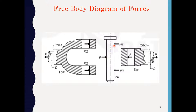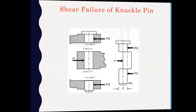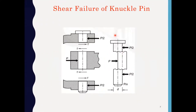These are the forces acting on the knuckle pin: P, P/2, and P/2. This is the free body diagram of the knuckle pin. This is the shear failure of the knuckle pin. Since the knuckle pin is divided into three portions, there is a chance of shear failure of the knuckle pin, and the shear is double shear.